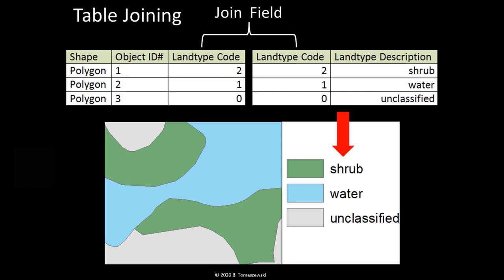Another important concept from database management that's incorporated into GIS is the idea of table joining. The basic idea behind table joining is where two tables have an attribute or join field in common that is used to combine the two tables into one table. In this example, you see a table containing polygons of land types that is being joined with another table that provides descriptions of those land types.